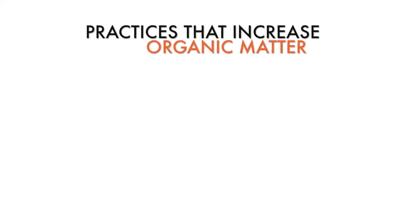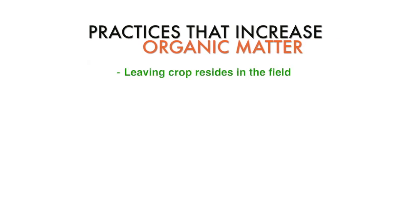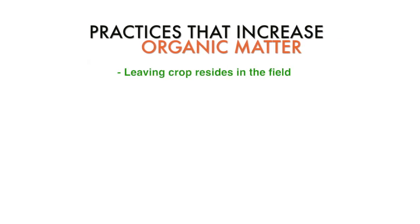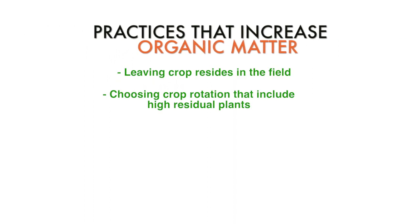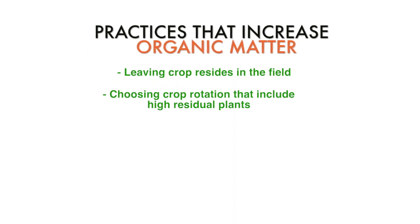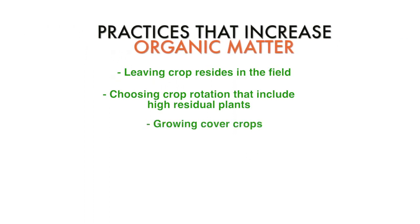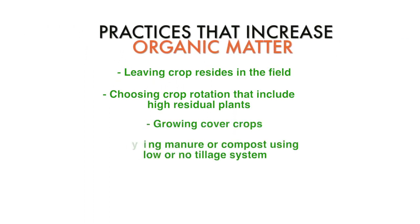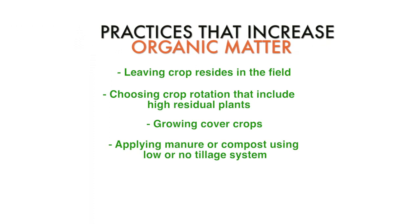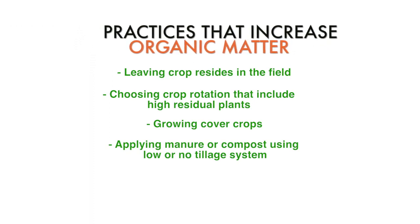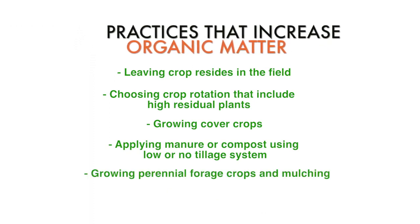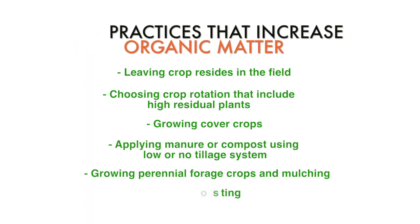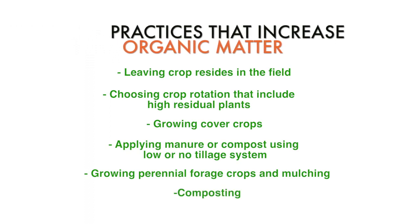Practices that increase organic matter include leaving crop residues in the field, choosing crop rotation that include high residual plants, growing cover crops, applying manure or compost using low or no tillage systems, growing perennial forage crops and mulching and composting.